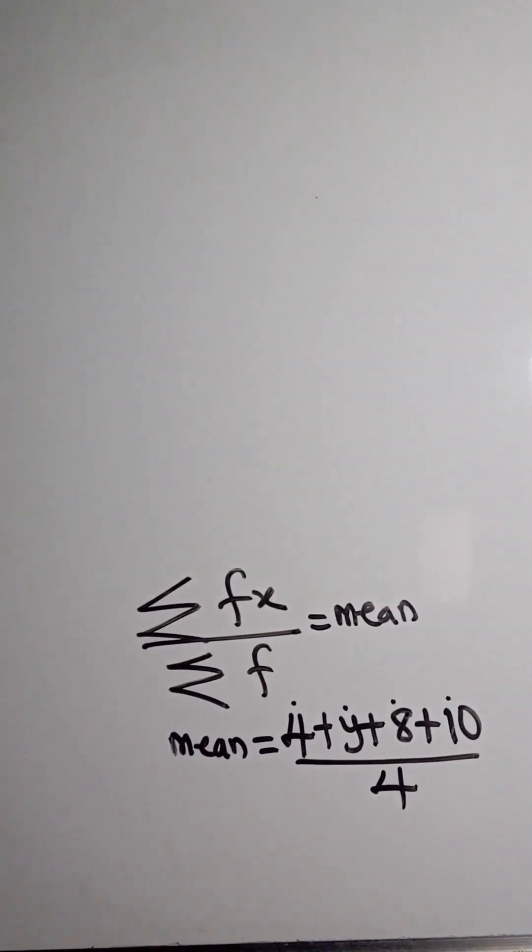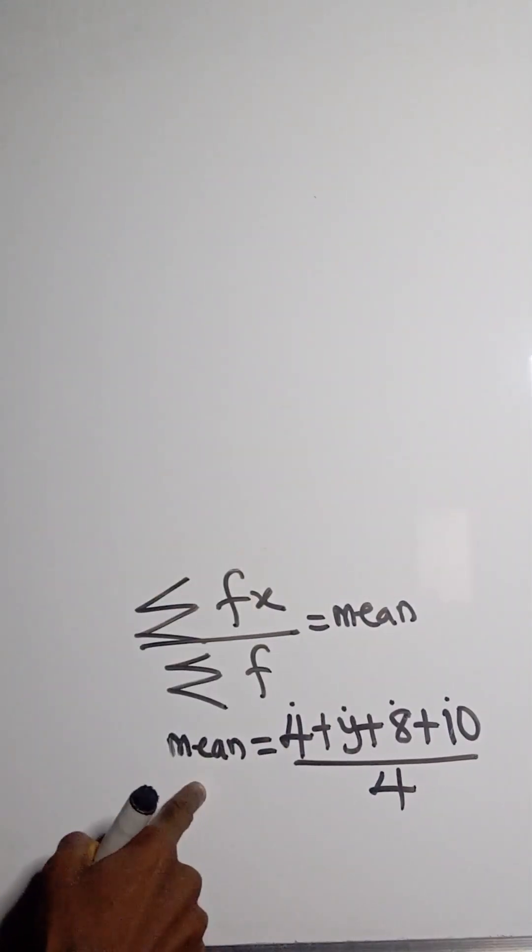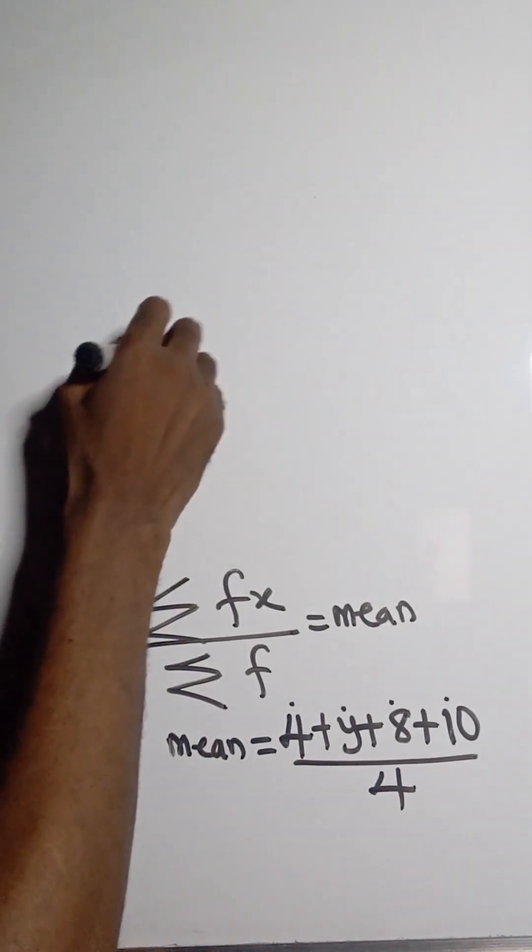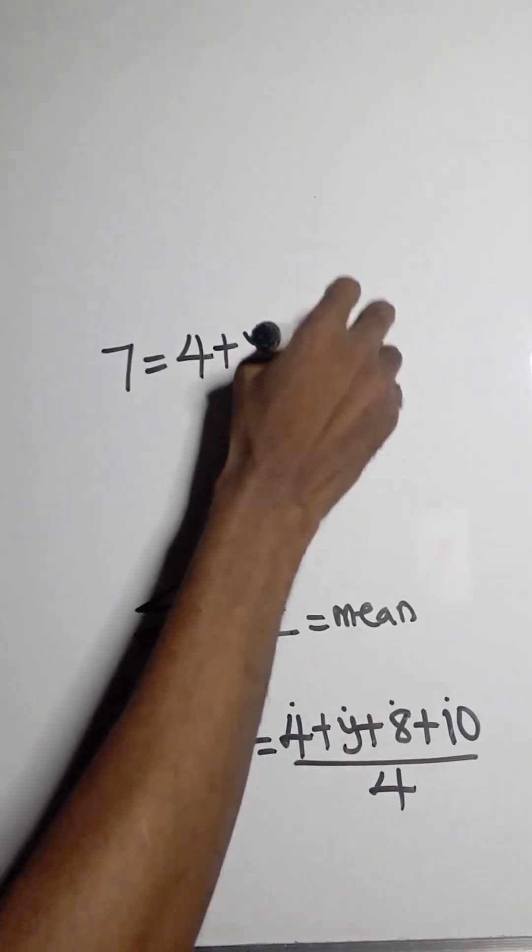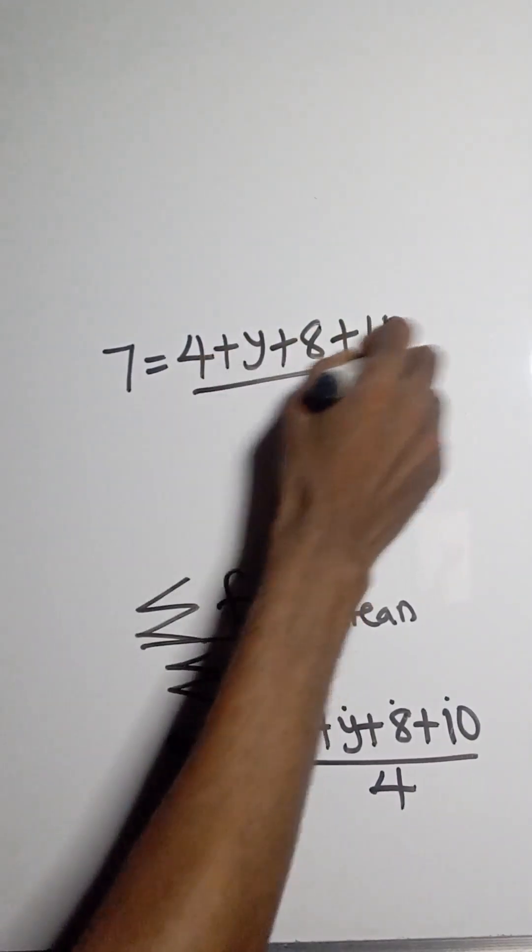So if it is equal to 7, this can take the place of 7. So 7 is equal to 4 plus y plus 8 plus 10 divided by 4.